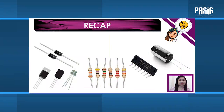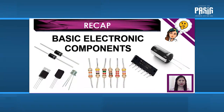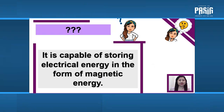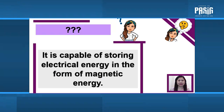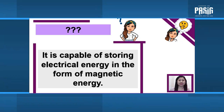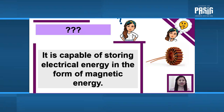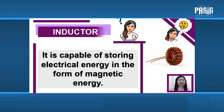Before we go to our lesson today, let's have a recap of your previous lesson on basic electronic components. I will be giving you the function of a component and show you the picture — all you have to do is identify what component it is. As an example: it is capable of storing electrical energy in the form of magnetic energy. The answer is: inductor. Now let us begin.